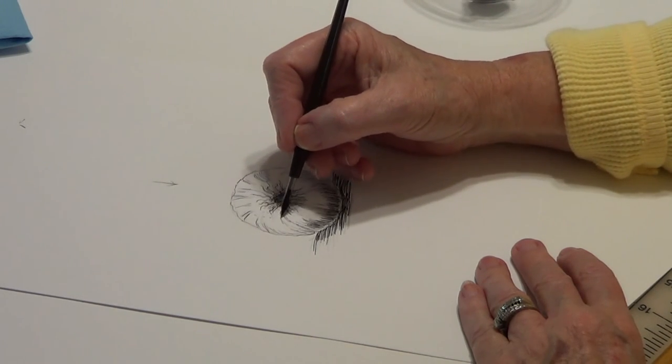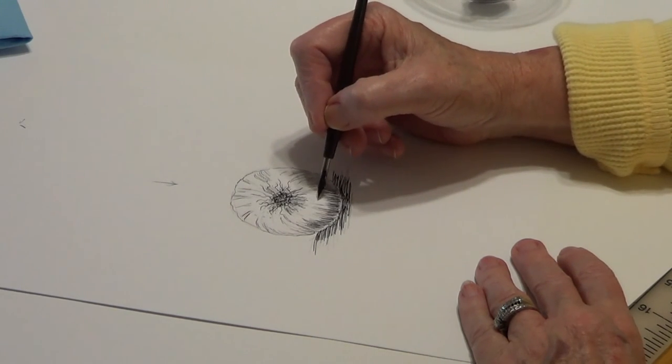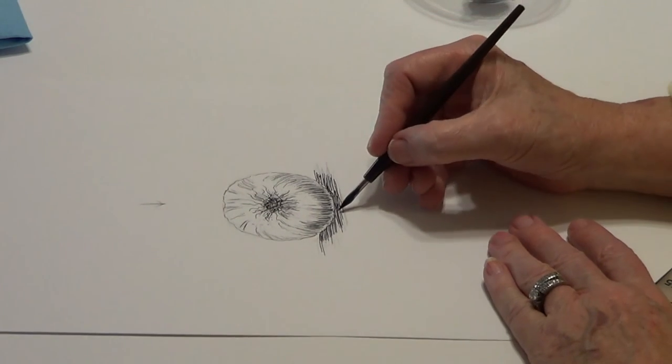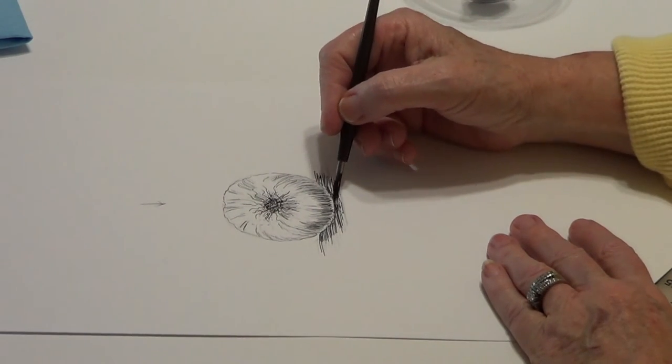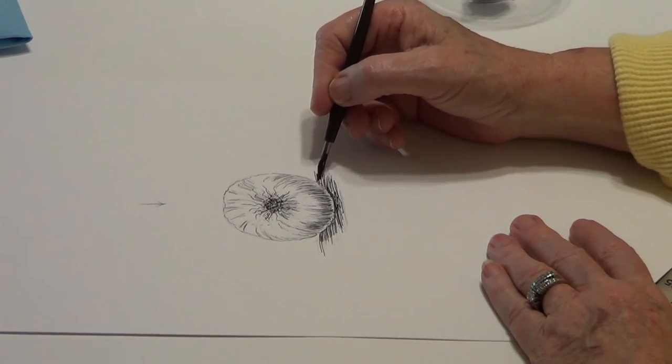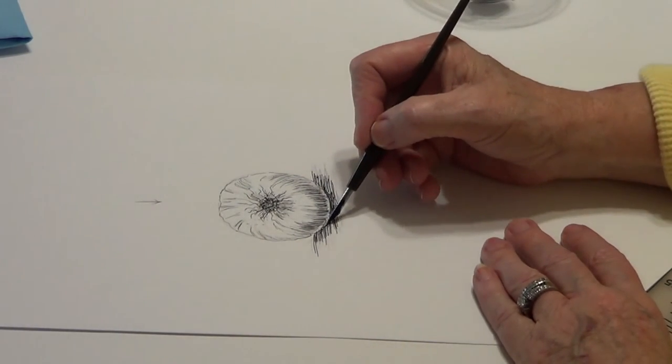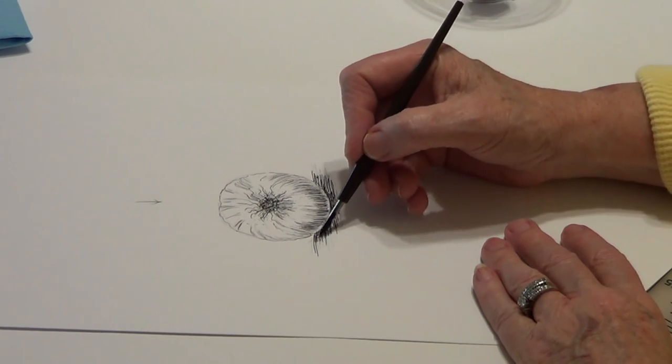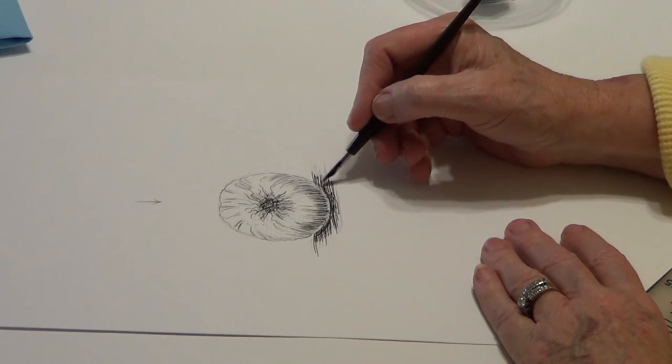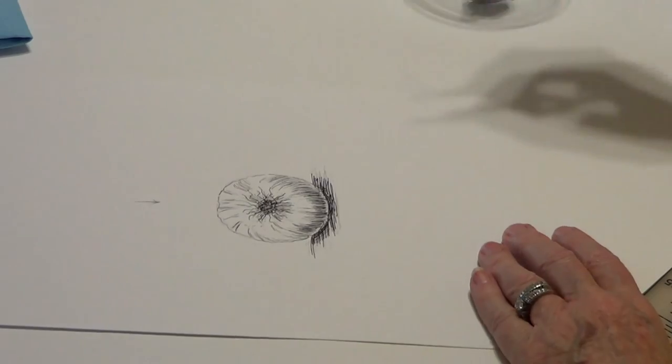I'm going to do a little bit of stippling here and there. Maybe a little bit more here and create some more value. And a little bit of crosshatch. I think I'm going to do a little bit of crosshatch here.